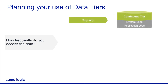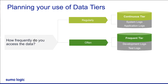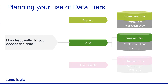For data sets where the use case is ad hoc searches, especially occasional use, are a good fit for the frequent or infrequent tier. When choosing between frequent and infrequent for a data set, consider how frequently you access the data. For example, if you have a large development team with hundreds of developers, it is better to send development and test logs to the frequent tier, as your developers are going to access it often. In contrast, debug or other verbose log sources used to troubleshoot very specific issues that occur infrequently — only a couple of times a week — are better off in the infrequent tier to keep the cost of ownership low.